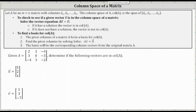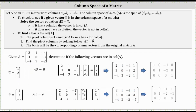Here we're given matrix A and asked to determine if the following vectors are in the column space of A. To determine whether vector u is in the column space, we need to see if there's a solution to A times vector x equals vector u. We set up the augmented matrix and write it in reduced row echelon form. Notice in row three we have zero, zero, zero, one — a contradiction, indicating zero equals one, which is never true. Therefore, there's no solution and vector u is not in the column space of A.